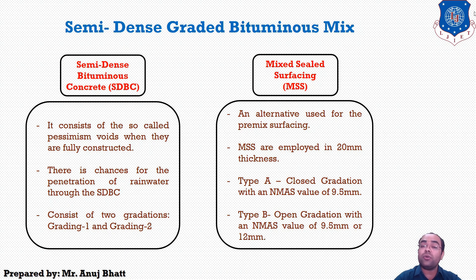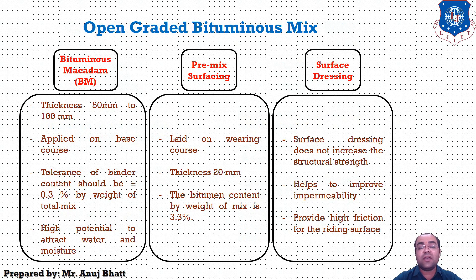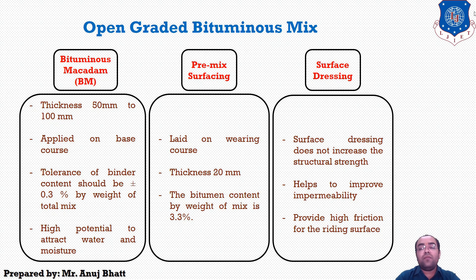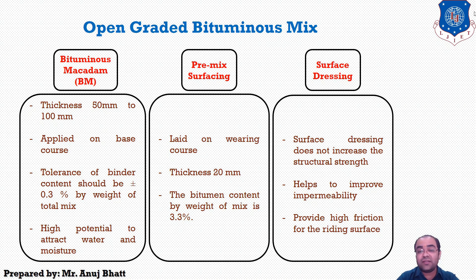Now talking about the open graded bituminous mix: open graded bituminous mixes have fine aggregates in a minimum amount, hence they are very permeable to water. They are employed based on specific function in the base and surface mixes. There are three different open graded bituminous mix types. For Bituminous Macadam (BM), work should consist of construction of a single course with thickness of 50 mm to 200 mm, or multiple courses of compacted crushed aggregate premixed with a bituminous binder on a previously prepared base.